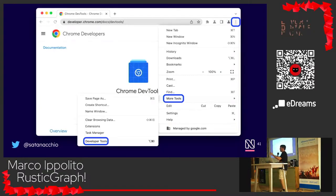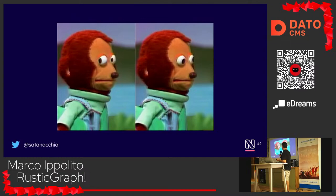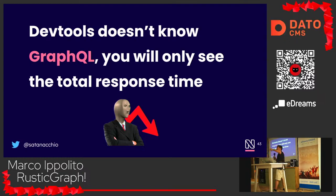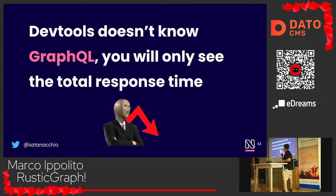But with GraphQL, you cannot do that the same way, because what you see is just one HTTP call — GraphQL uses a single HTTP call for all the data you're querying. So you only see the total response time, which could be seconds or minutes if something is wrong, and that doesn't help you pinpoint the issue.